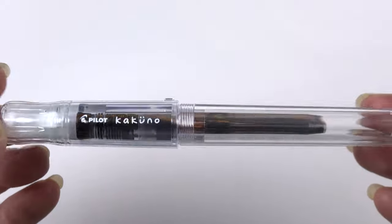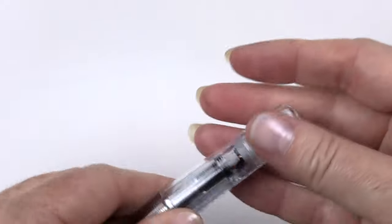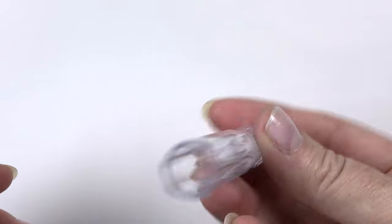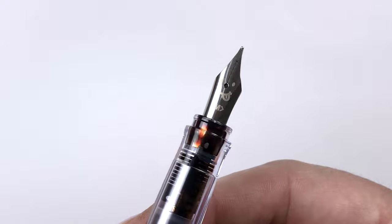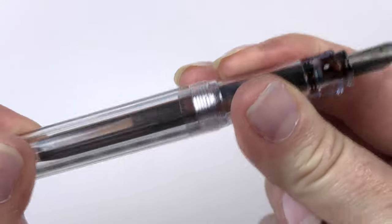This next one is the Pilot Kakuno. This one is a little more expensive than the Preppy. This probably runs from $8 to $14 depending where you buy it. It does have an inner cap here too. It's not on a spring system, but I find that it keeps the nib really wet. It's great. I never get a hard start with it.